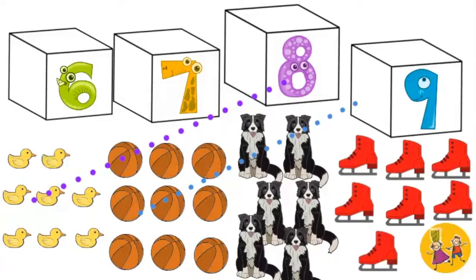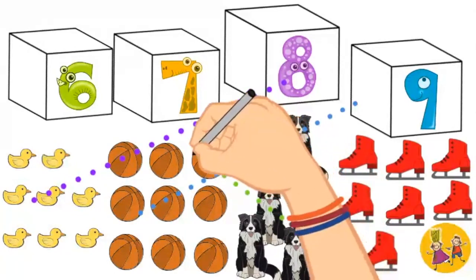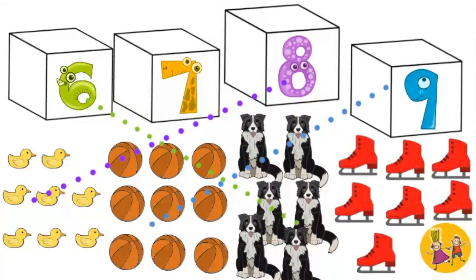And now the last we have skates. How many are here? 1, 2, 3, 4, 5, 6. Box number 7. So we match it with box number 7.